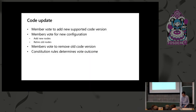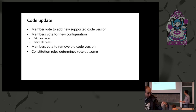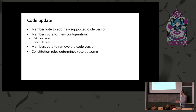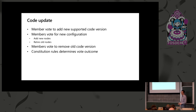Code updates use a simple three-phase mechanism. First, you add a new supported code version through the vote mechanism and everyone agrees. While you spin up new nodes running the new version, you need to ensure the new and old versions are compatible. Then you stage another vote to remove the old version — especially if the new version contained a security fix and you don't want the old version to run anymore. Once that vote passes, nodes running the old code can no longer be part of the network and you can tear them down.